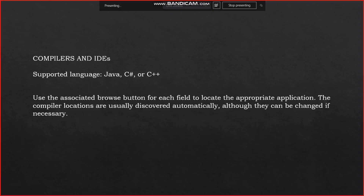Now, the compilation IDEs of the Eggplant testing tool. On the compilation IDEs page, choose the integrated development environment you want to use for editing, debugging, and compiling your scripts. You may also need to specify an IDE for your build environment before you can build your project. You can choose an IDE for each supported language like Java, C-Sharp, and C++, and use the associated browser button for each field to locate the appropriate application. The compiler locations are usually discovered automatically, although they can be changed if necessary.